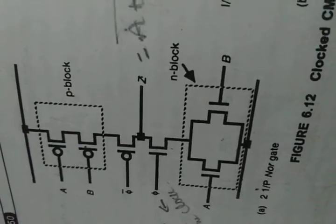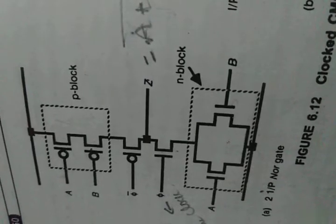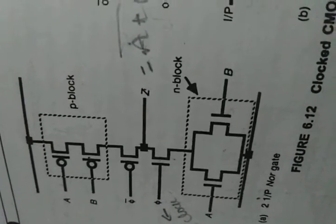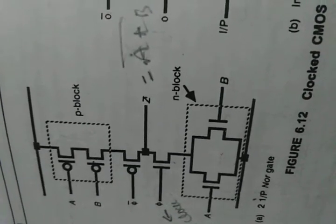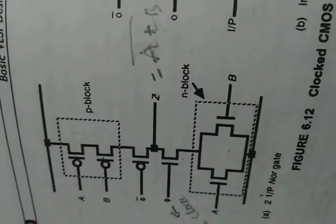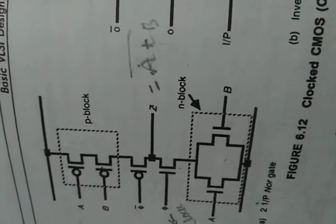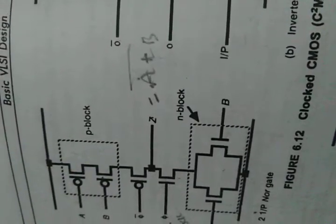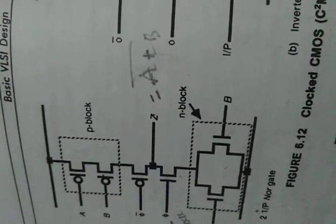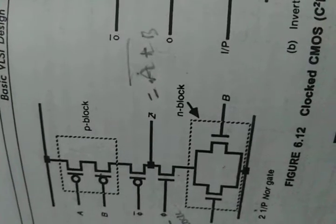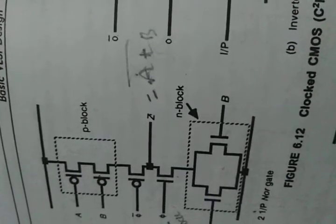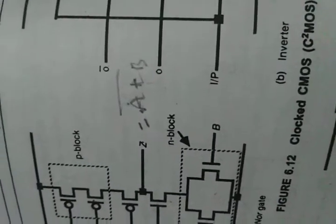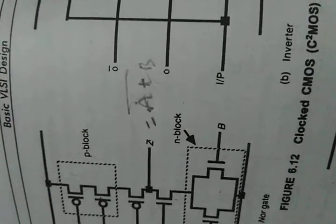This is the working of the clocked CMOS logic, also called C-squared MOS logic. With the additional transistors, the area increases. If additional transistors are added, area increases, and the output rise time and fall time also increase, resulting in more delay.